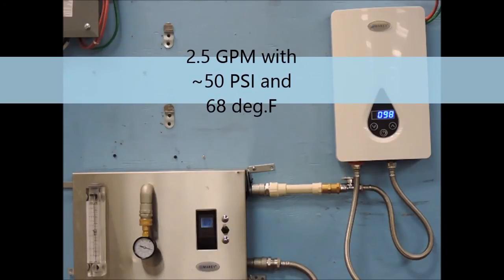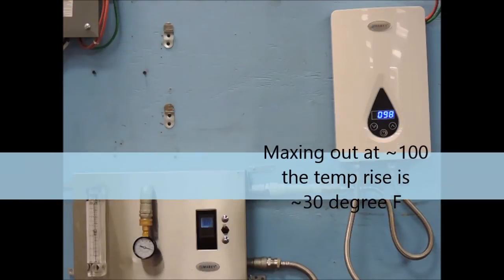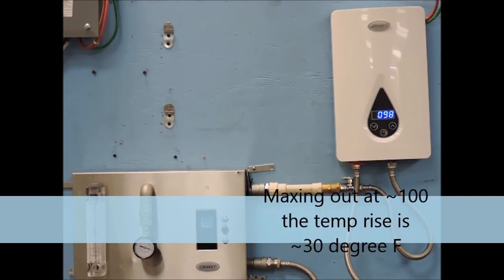In the first test, we have a 2.5 gallons per minute flow rate at 50 psi, with an incoming water temperature of around 68 degrees. With these input parameters, you can see that our outgoing water temperature is 98 degrees, or a 30 degree rise.